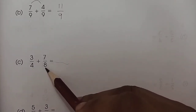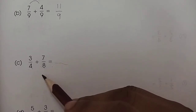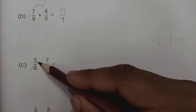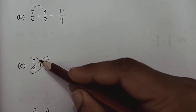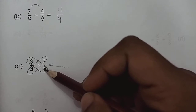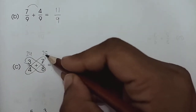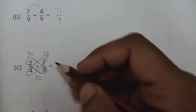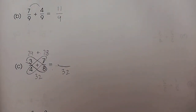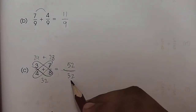When denominators are different, we have two methods to solve these fractions. The first method is the butterfly method. After making the butterfly shape, we multiply the numbers diagonally: 3 into 8 is 24, and 7 into 4 is 28. Then 4 into 8 is 32, so our denominator would be 32. We add up 24 plus 28, which gives us 52. Then we simplify — we find a number that divides both.